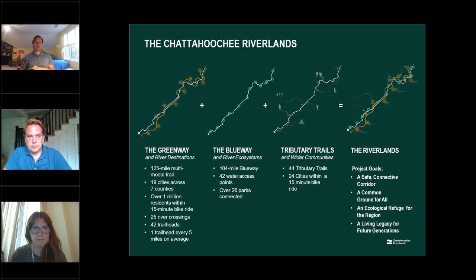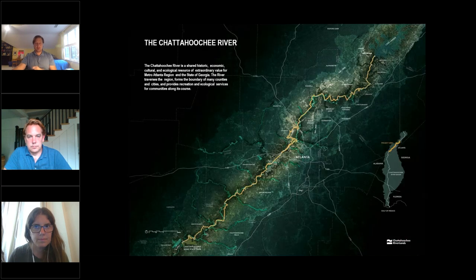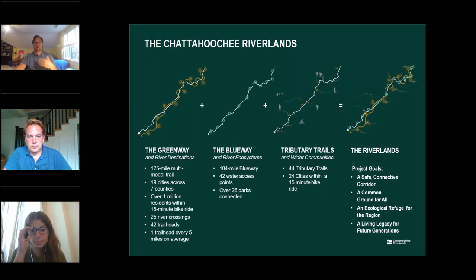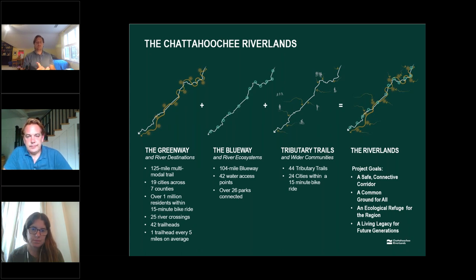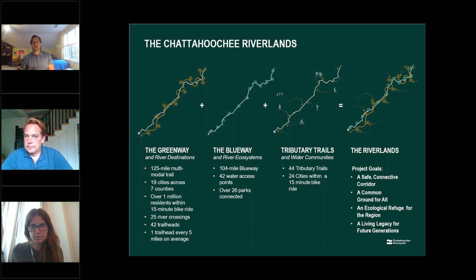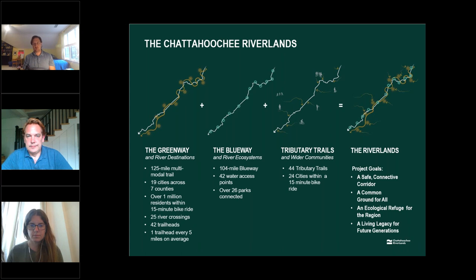As we got into this conversation and started talking to groups like the National Park Service and recreational groups who have done a lot to promote paddling on the river, we started to integrate a blueway element — the river itself being a recreational leisure paddling opportunity that would tie in at access points coinciding with the trail. And then there are so many great trails in the metropolitan region that the Chattahoochee River forms such a core spine throughout the region that these connections are really what will feed into that network and make this doable. We call those tributary trails.